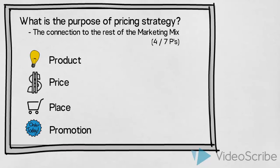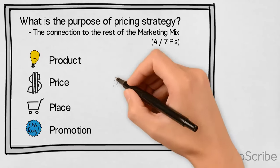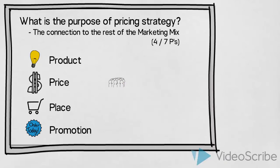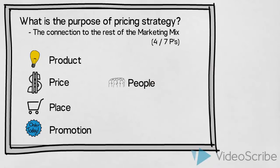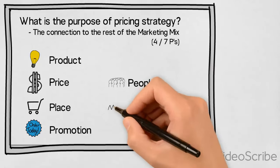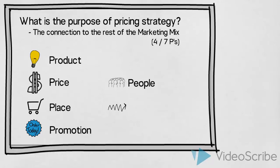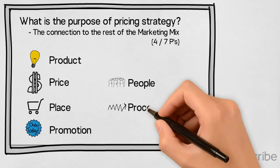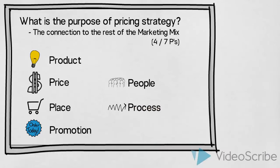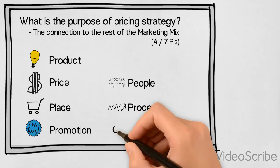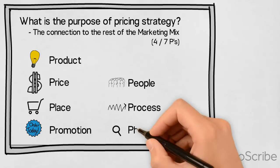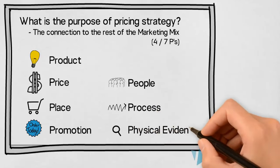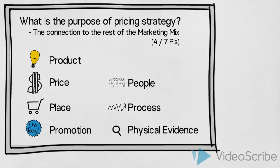If we are dealing with an offering that is better described as a service, or perhaps a product that includes large elements of service, we might also want to look at the additional three P's: the people that are involved in delivering the service, the process that our customers will go through in order to receive our service, and the physical evidence — any visible or tangible elements that the customer will see, hear, or in other ways experience when receiving the service.